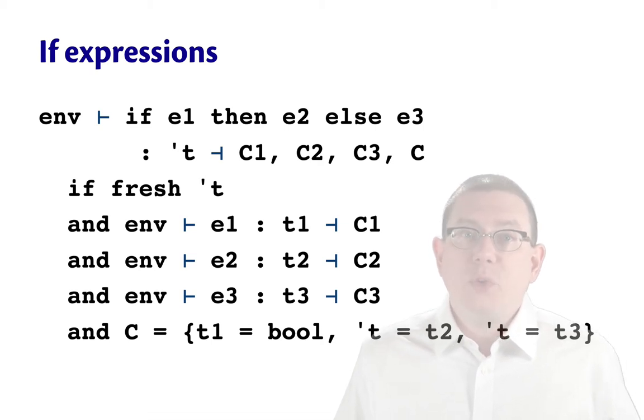So inference returns tau as the type of the if expression, along with all of the constraints from the sub-expressions, c1, c2, and c3. And additionally unions in those three new constraints on the type of the guard, the type of the then branch, and the type of the else branch. I'm writing comma here between these sets of constraints rather than a union symbol, just because it's easier to type on my keyboard.